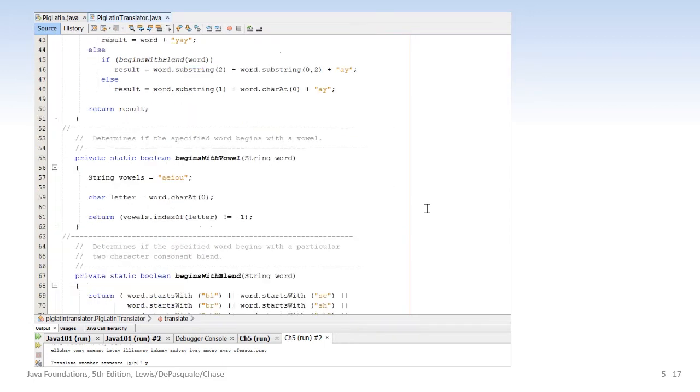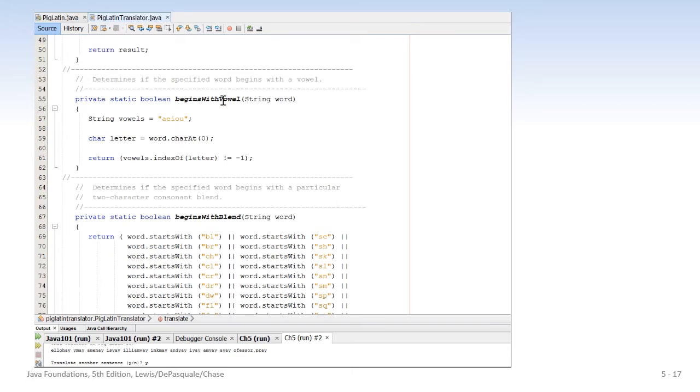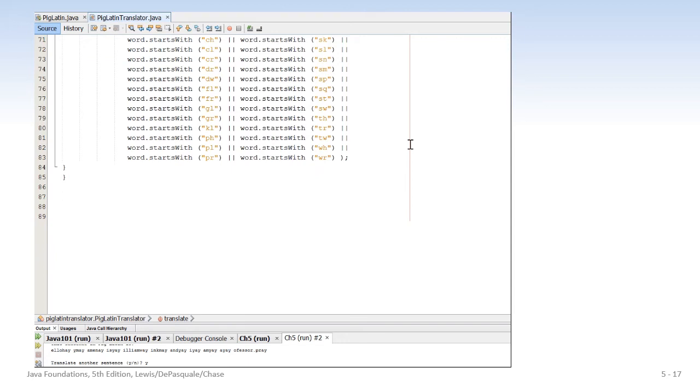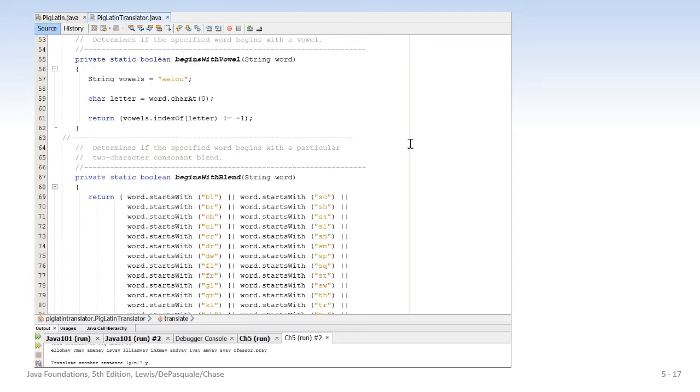And here we have the static boolean 'begins with vowel'. And it basically compares the word character at zero with a, e, i, o, u. And if it finds that that's true, we're returning the index not equal to negative one, which means it didn't find that character in the string. And here's the static boolean 'begins with blend'. And here's all the possible blends that the word may begin with. And if it does begin with one of those, then you saw what happens. And that's it. This is a very elegant solution to a problem that's probably more complex than anything we've seen so far in this class.